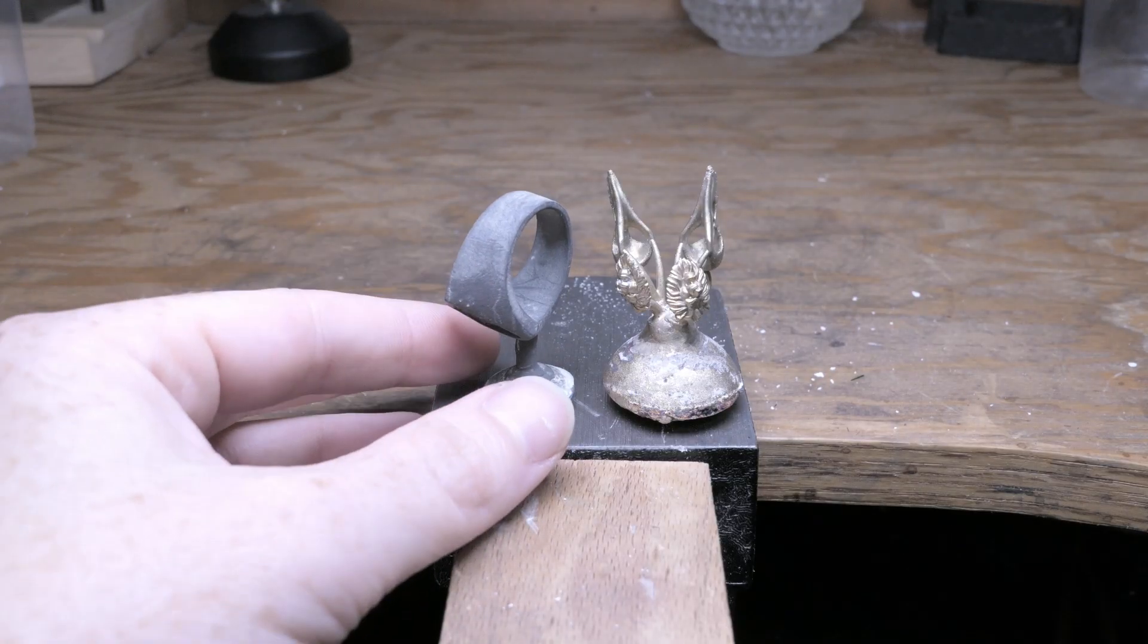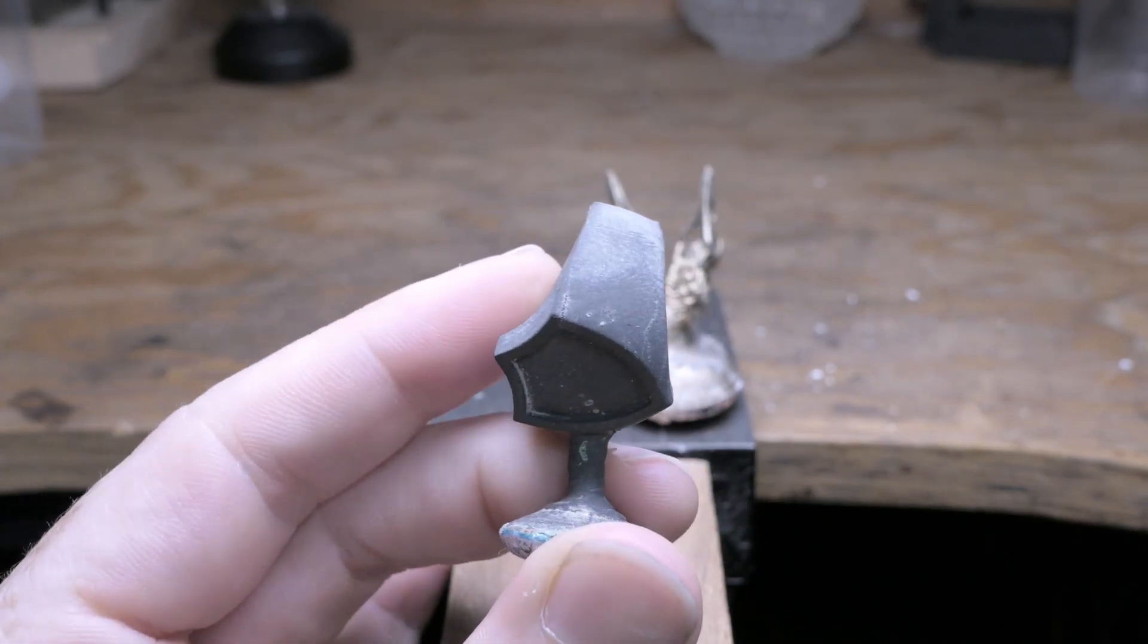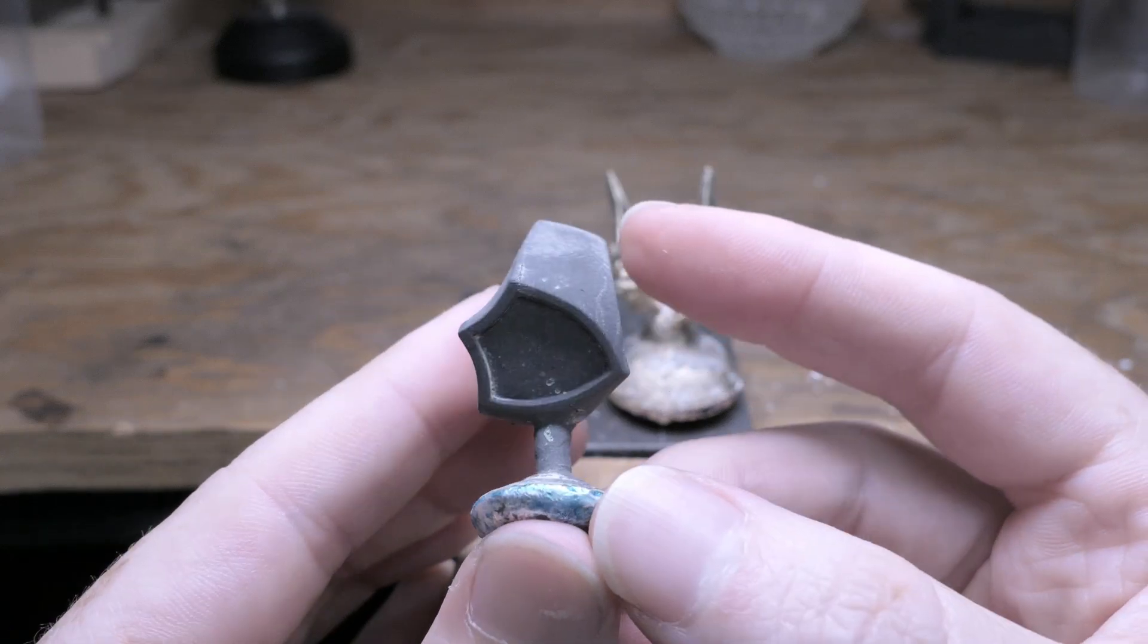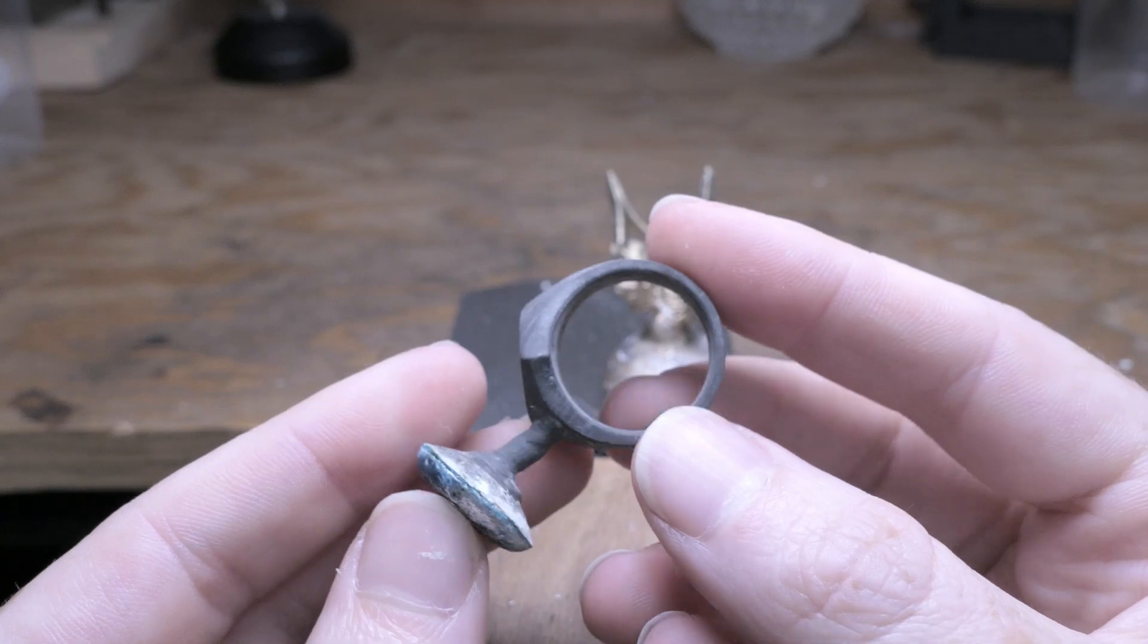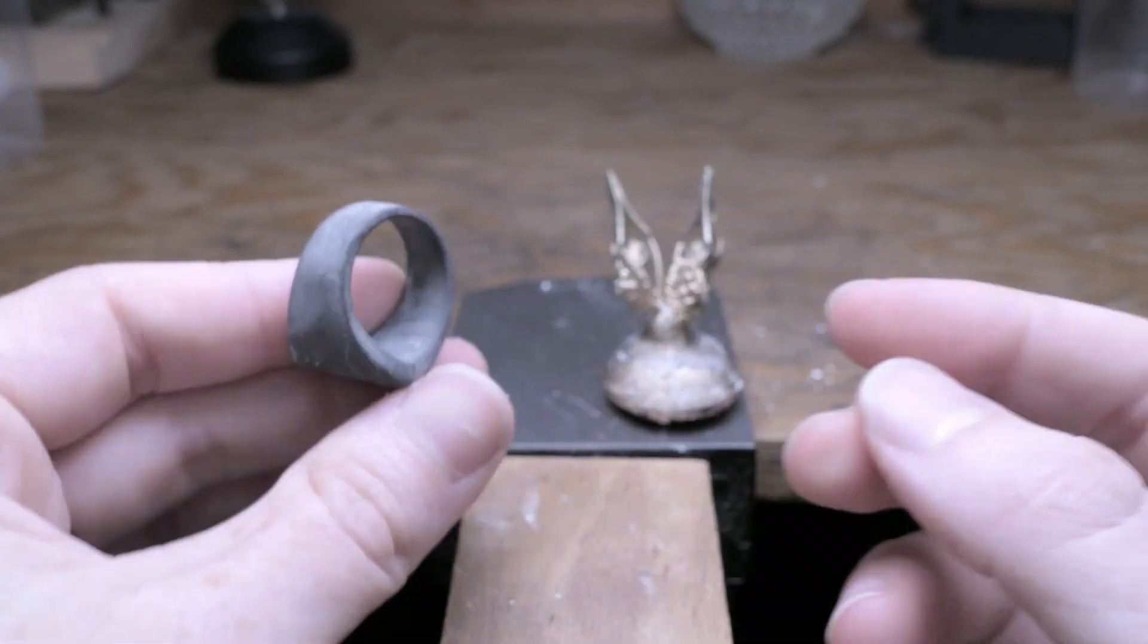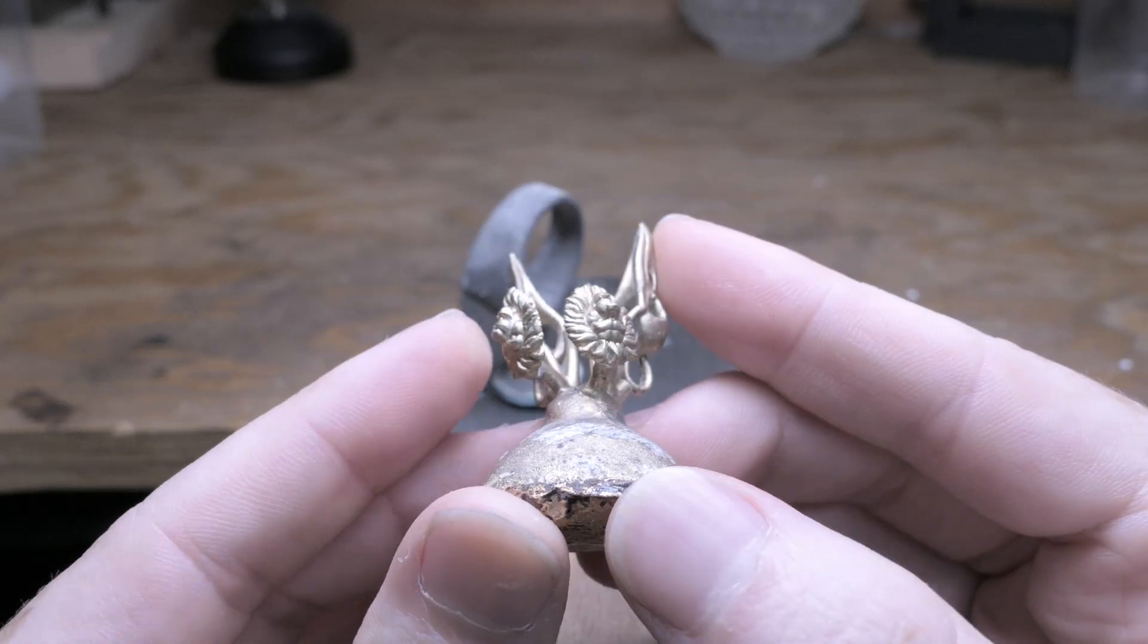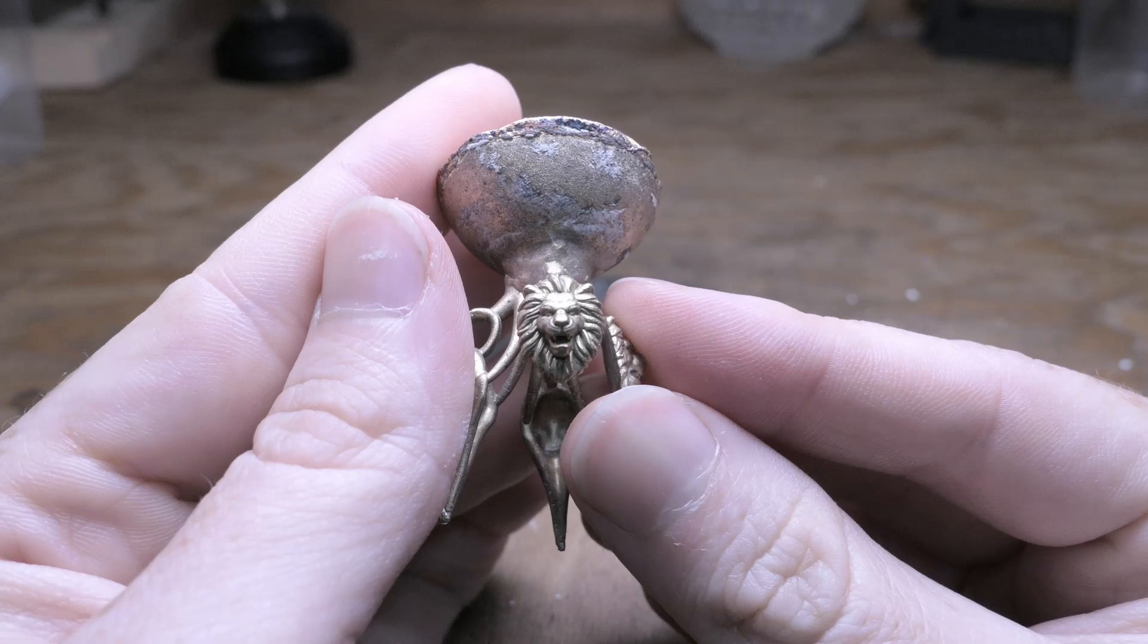But here are the raw castings and you can see the silver ring turned out pretty nice just with a few slight surface imperfections from some bubbles in the investment. But those can be easily cleaned up. And here are the bronze castings done with the castable resin and you can see the lion head turned out really nice.